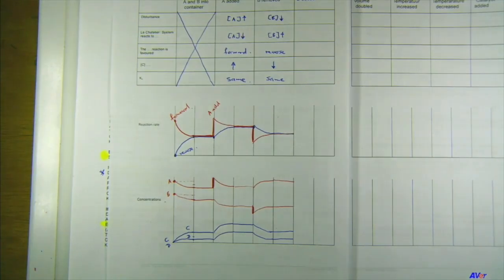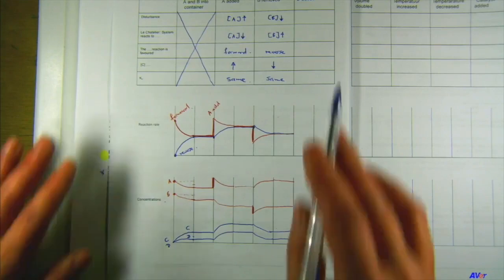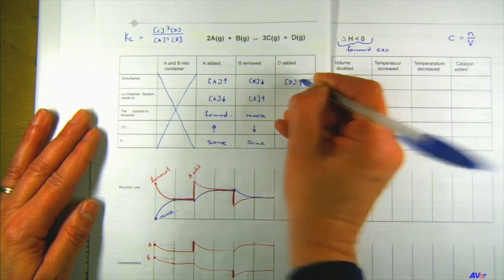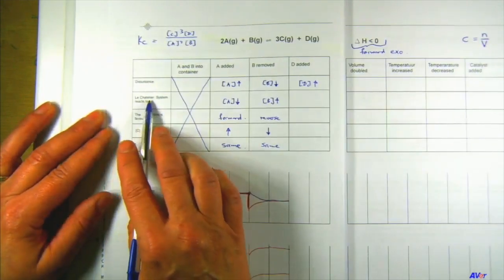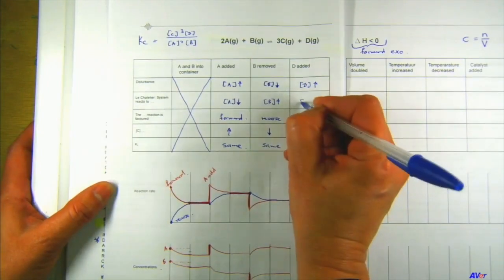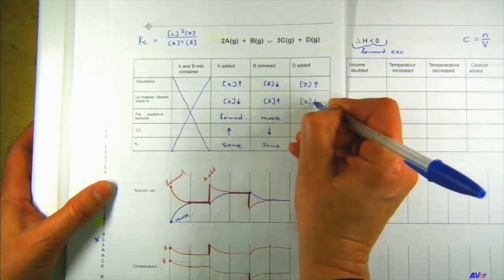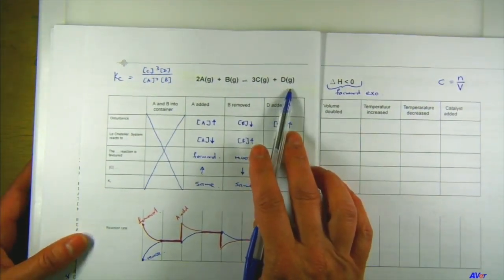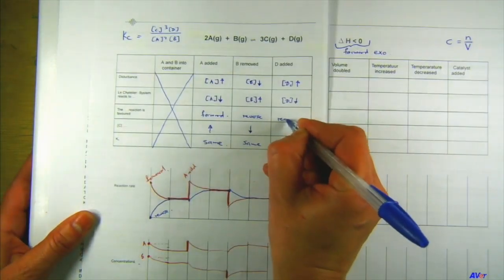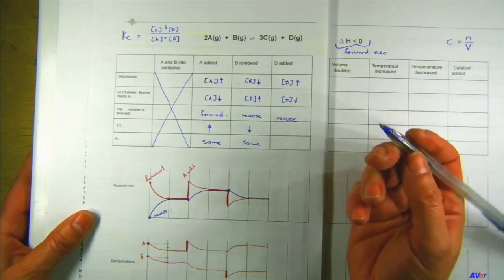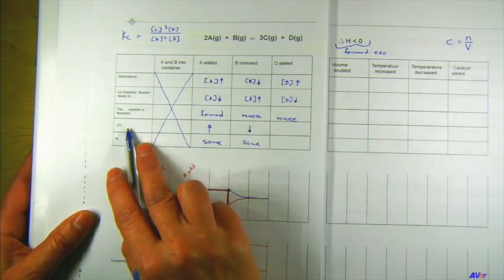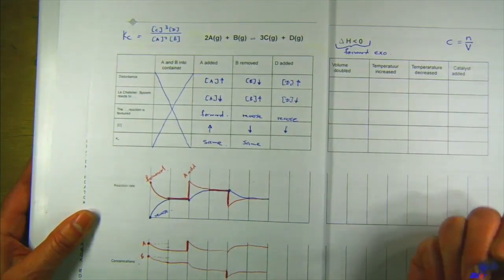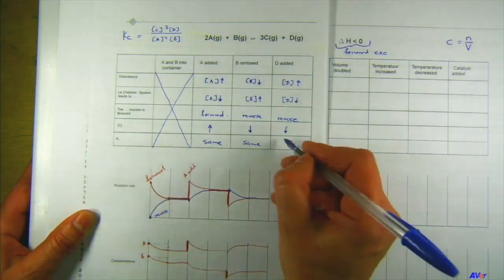The next one: I'm adding D. The disturbance is that the concentration of D increases. Le Chatelier says the system reacts to decrease D by favoring the reverse reaction. That means the concentration of C decreases — bad for sales. The KC value stays the same since there's no temperature change.